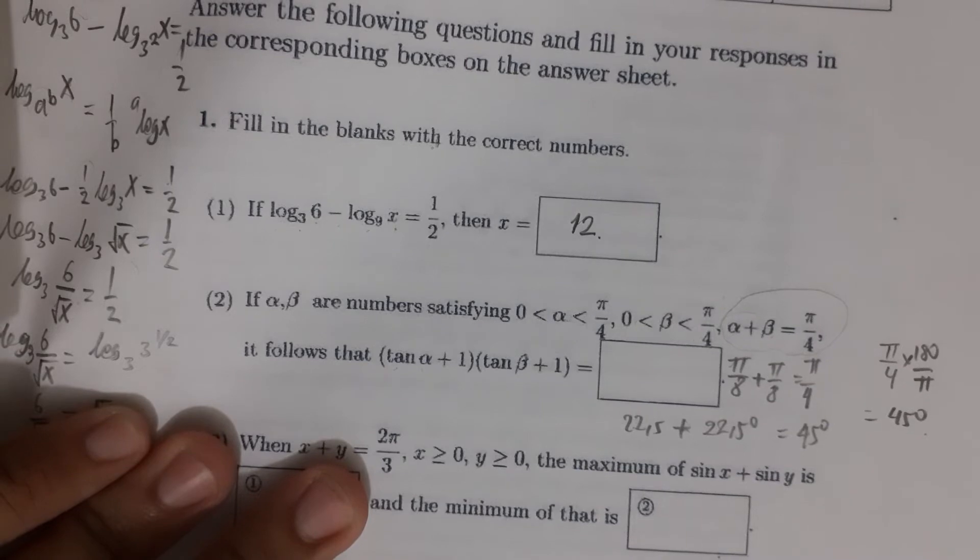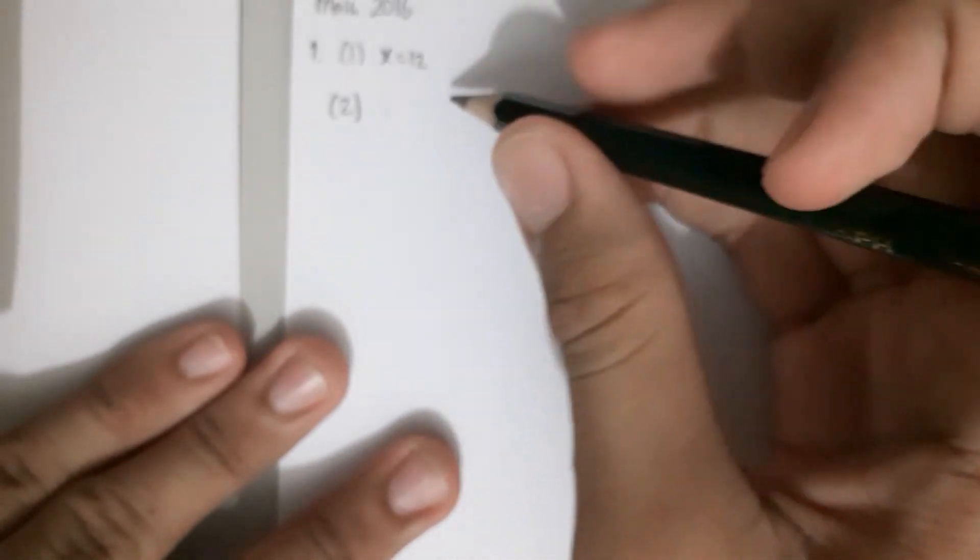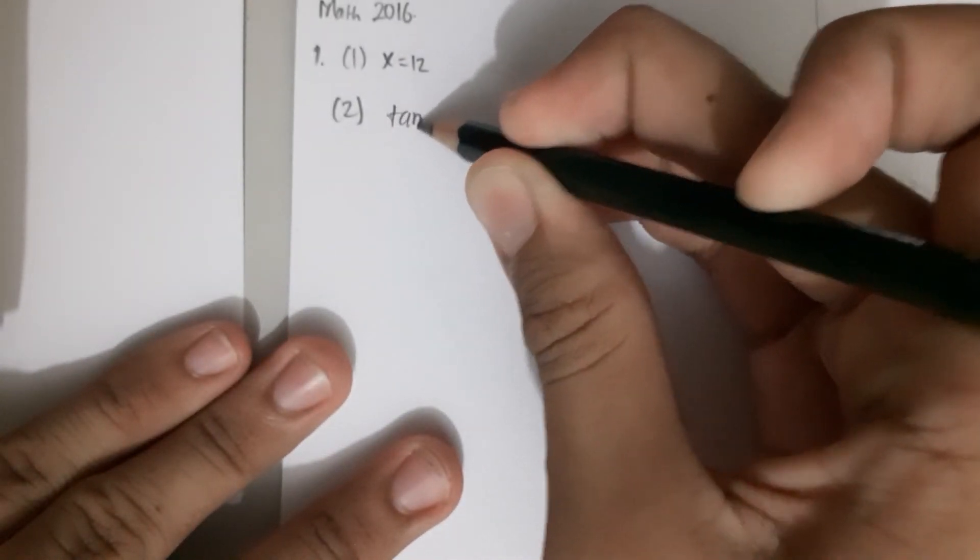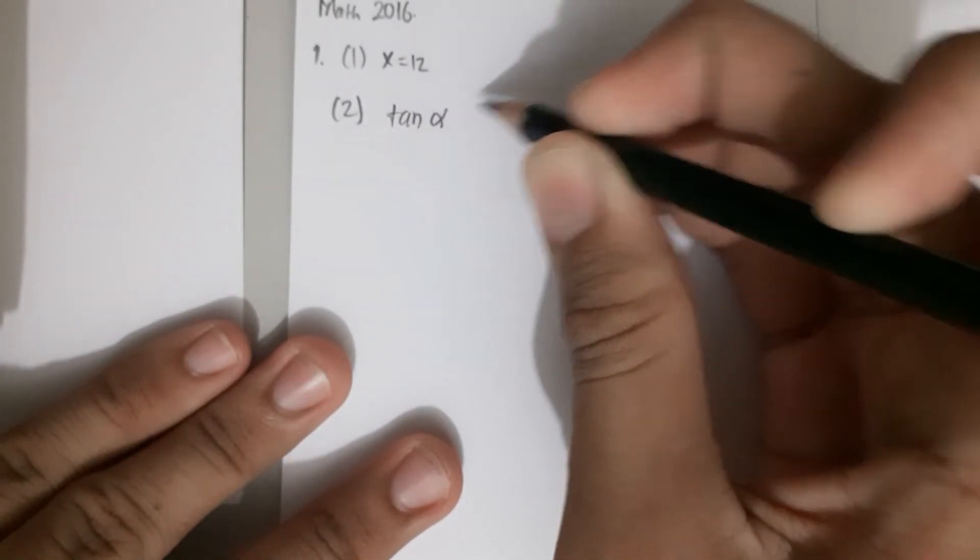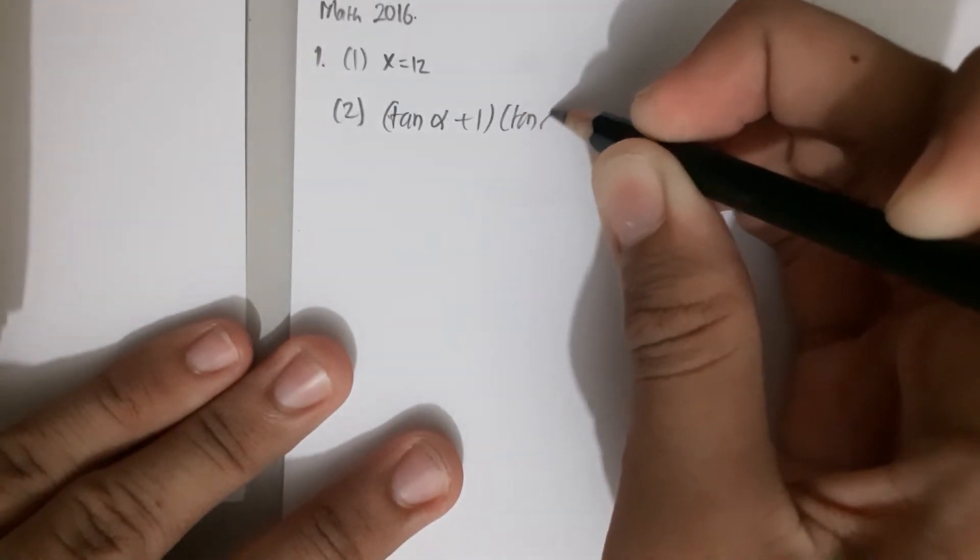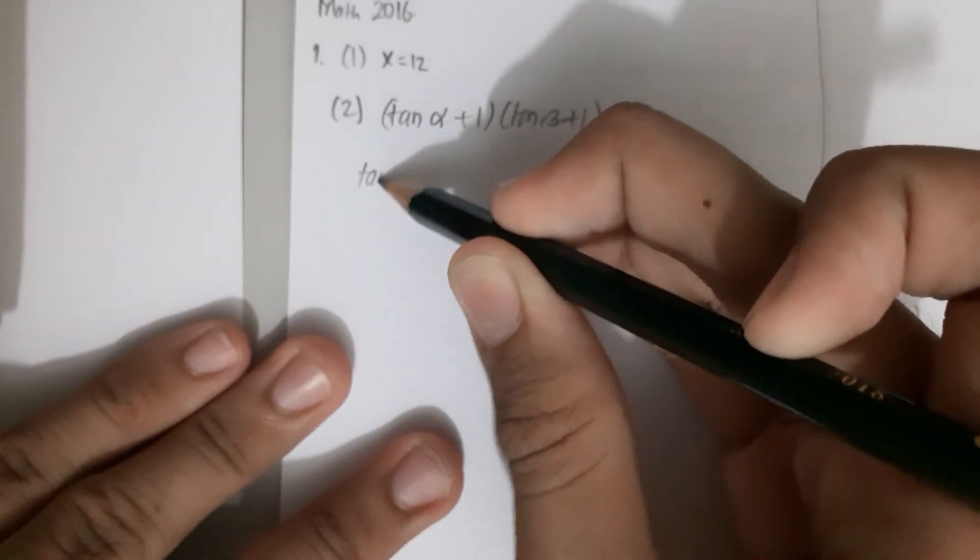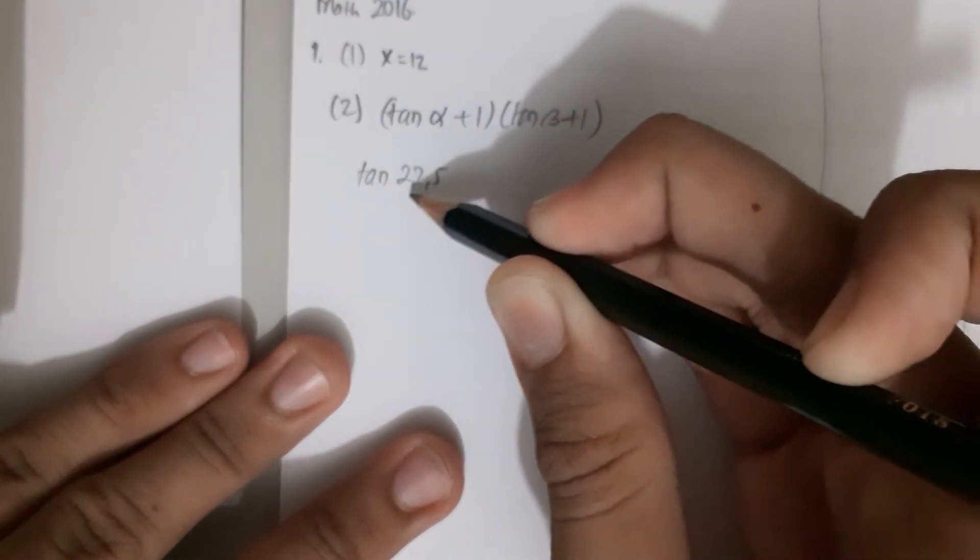We know that we also have to consider tan α + 1 and tan β + 1. We cannot just put this value in the bracket, but we have to understand the relation of the degree between 22.5 and 45.